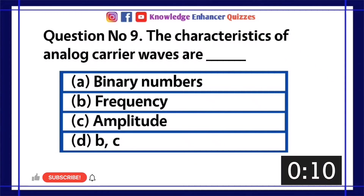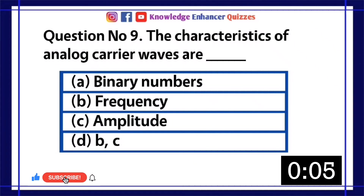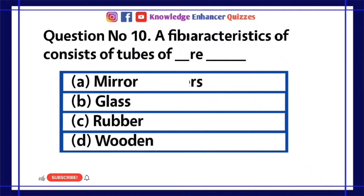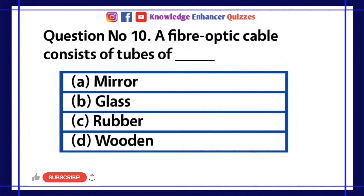Question number 9: The characteristics of analog carrier waves are dash. A. Binary numbers. B. Frequency. C. Amplitude. D. B and C. Option D is the right answer.